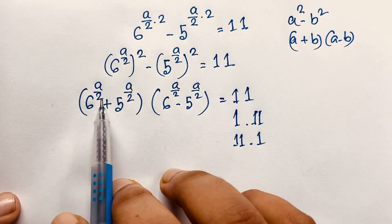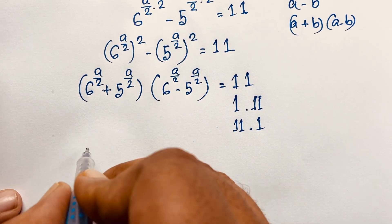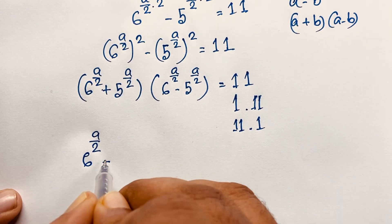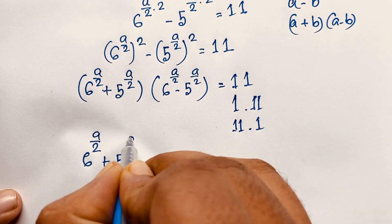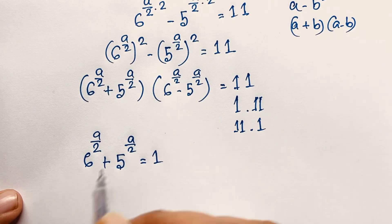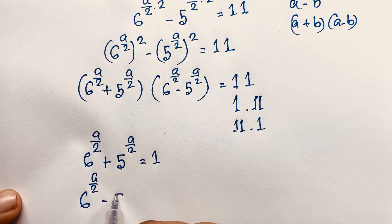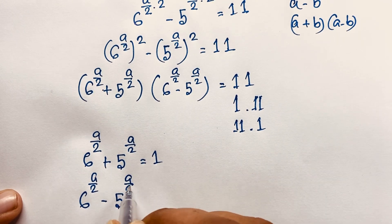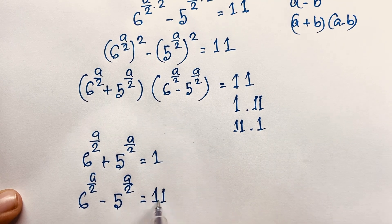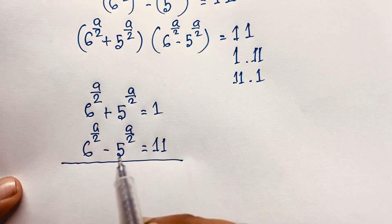So if we take both values: the first factor gives us 6 to the power (a over 2) plus 5 to the power (a over 2) is equal to 11, and the second factor gives us 6 to the power (a over 2) minus 5 to the power (a over 2) is equal to 1.